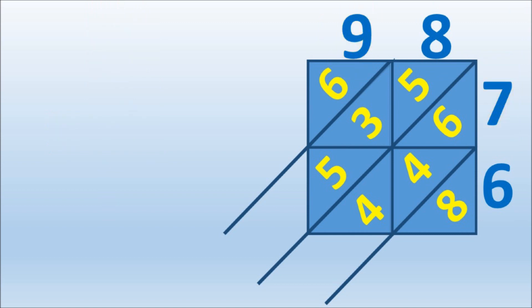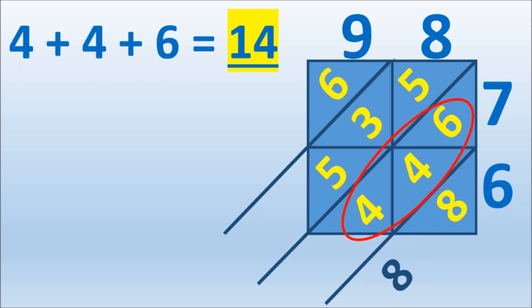Again add diagonally from the bottom up. 8 plus 0 is 8. 4 plus 4 plus 6 is 14. Place the 4 on one line and the number 1 on the line above.